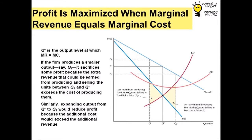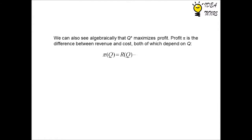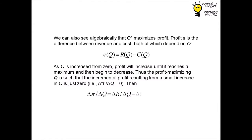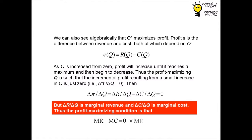Similarly, expanding output from q* to q2 would reduce profit because the additional cost would exceed the additional revenue.